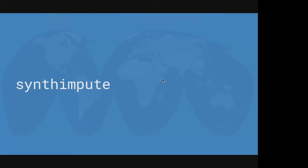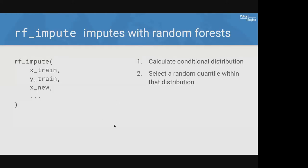Given that random forest performed well and makes it easy to get a large number of quantiles, that's the approach SynthImpute uses. The core of SynthImpute is the RF-Impute function. You pass in training predictors X_train, training labels Y_train, and X_new. It trains a random forest model, then for every record calculates the conditional distribution and selects a random quantile from within that distribution.